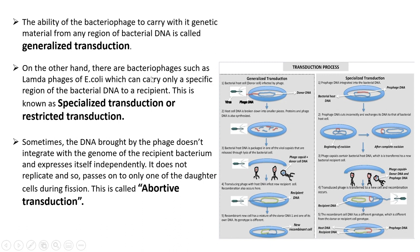In specialized transduction, certain bacteriophages such as lambda phages of E. coli can carry only a specific region of the bacterial DNA to a recipient — also called restricted transduction. The prophage DNA integrates into the host, and during excision it takes a small part of the adjacent bacterial DNA along with it. Sometimes the DNA brought by the phage doesn't integrate into the recipient's genome and expresses itself independently; since it doesn't replicate, it passes to only one daughter cell during fission — this is called aborted transduction.